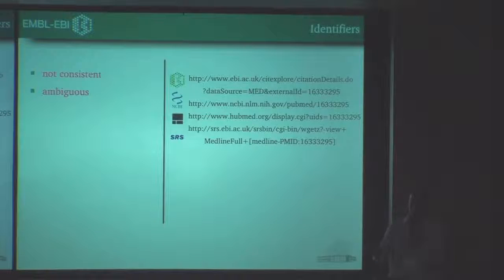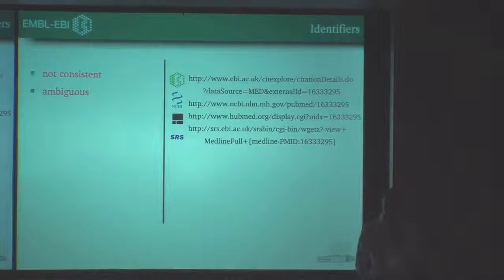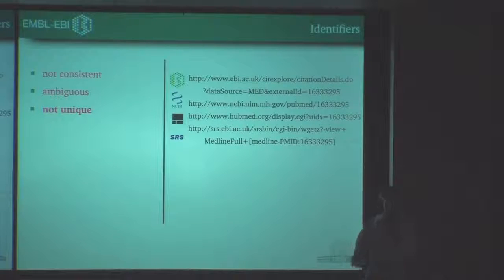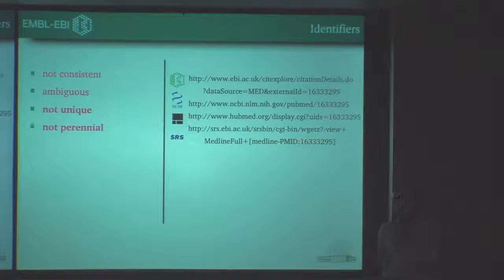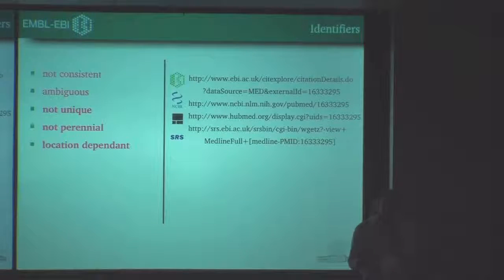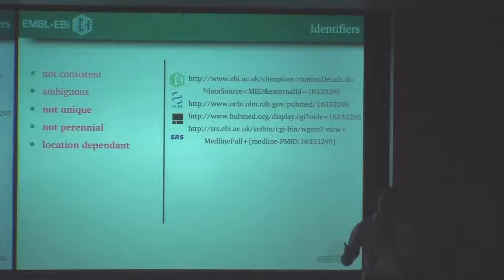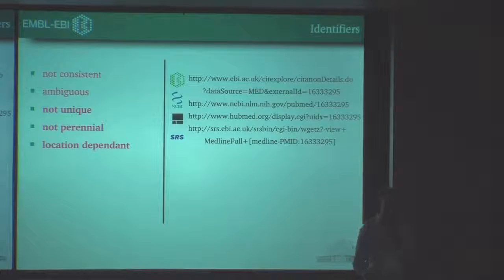Some people decided to just put the physical location — the URL — and thought that should be fine. However, there are various issues. As you can see here, I'll give an example: four URLs all linked to the same thing, so it's not unique. Second, it's not persistent, because URLs have changed over time. And another thing: it's location-dependent, and one of these resources can, for example, lose funding and no longer provide the data. So that's an issue.